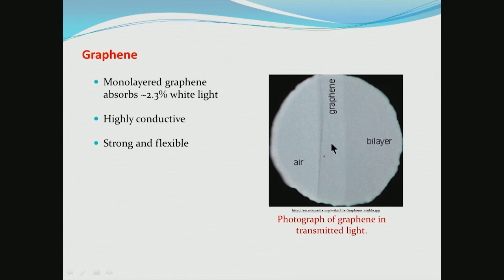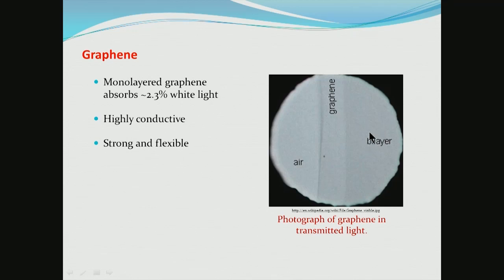What we are looking at here is a photograph of a graphene layer produced by CVD in transmitted light. In the middle you see a monolayer of graphene — visible because a graphene monolayer absorbs 2.3% of white light. Next to that is a bilayer of graphene, two layers of graphite on top of each other. These are produced rather readily now by the CVD process.